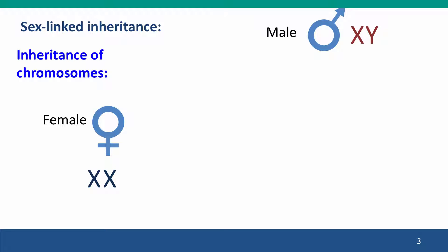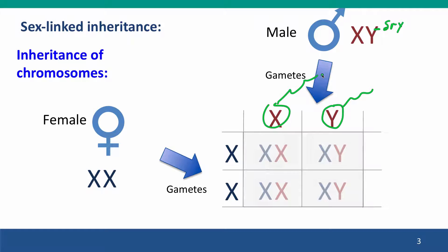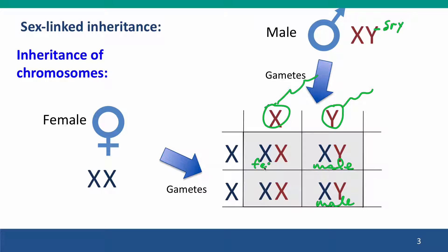We discussed in Module 4 how gender, in particular maleness, is determined by the presence of the SRY gene on the Y chromosome, and that every egg fertilized by a Y-bearing sperm will develop into a male offspring, while every embryo fertilized by an X-bearing sperm will develop into a female.